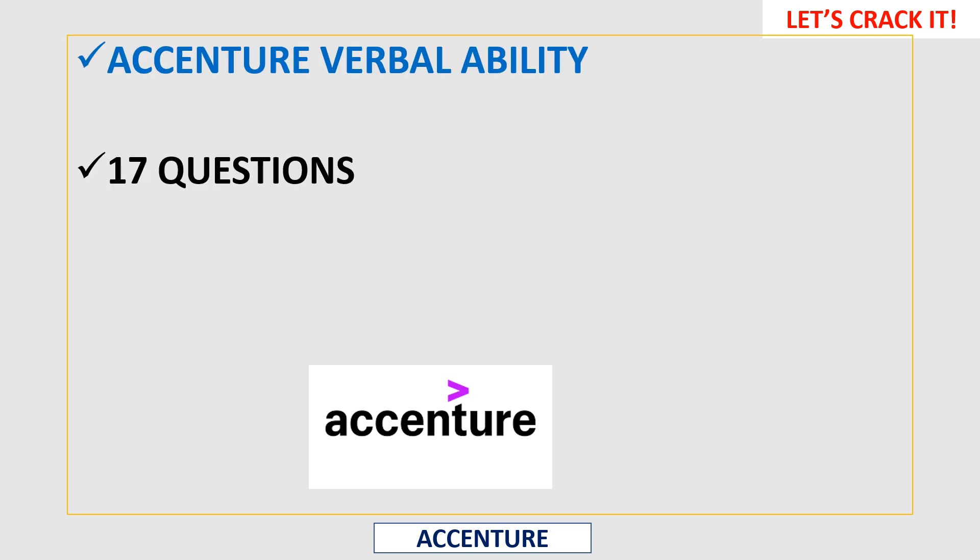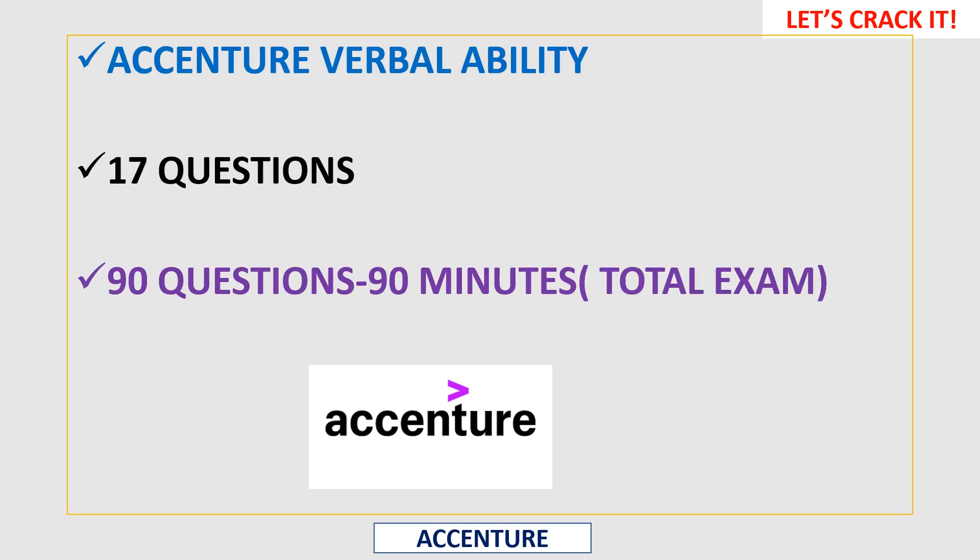In total there are 17 questions related to verbal ability or English questions, out of 90. There is no separate time given — out of 90 minutes it is for all the sections. Without much delay, let's start solving.